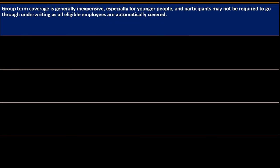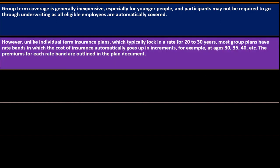Advantages and disadvantages of group term life insurance: Group term coverage is generally inexpensive, which is nice especially for younger people, and participants may not be required to go through underwriting, as all eligible employees are automatically covered.